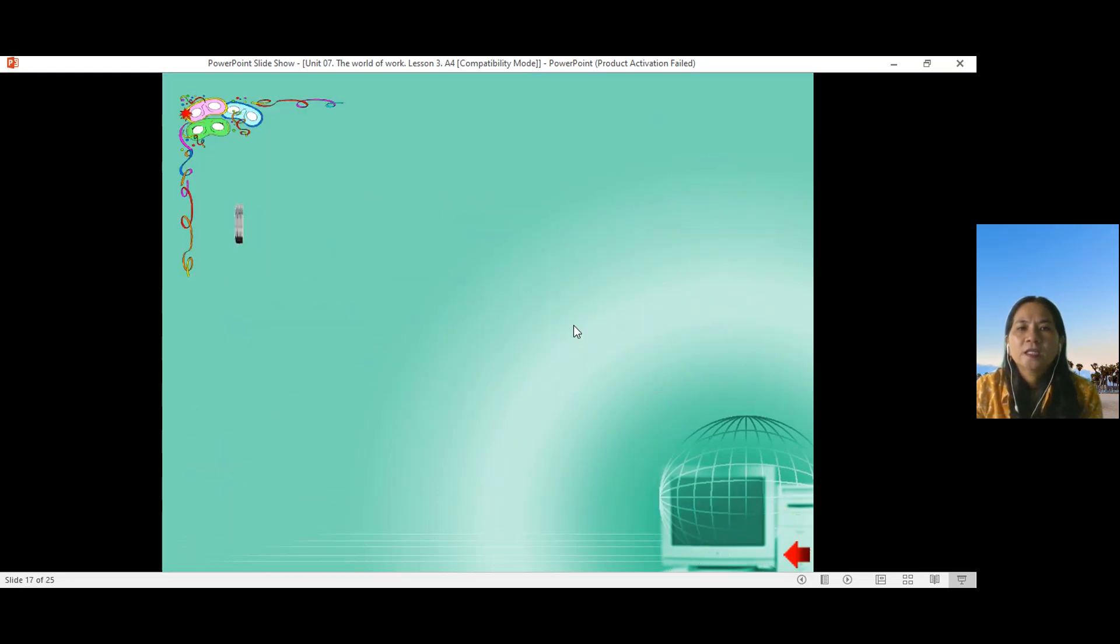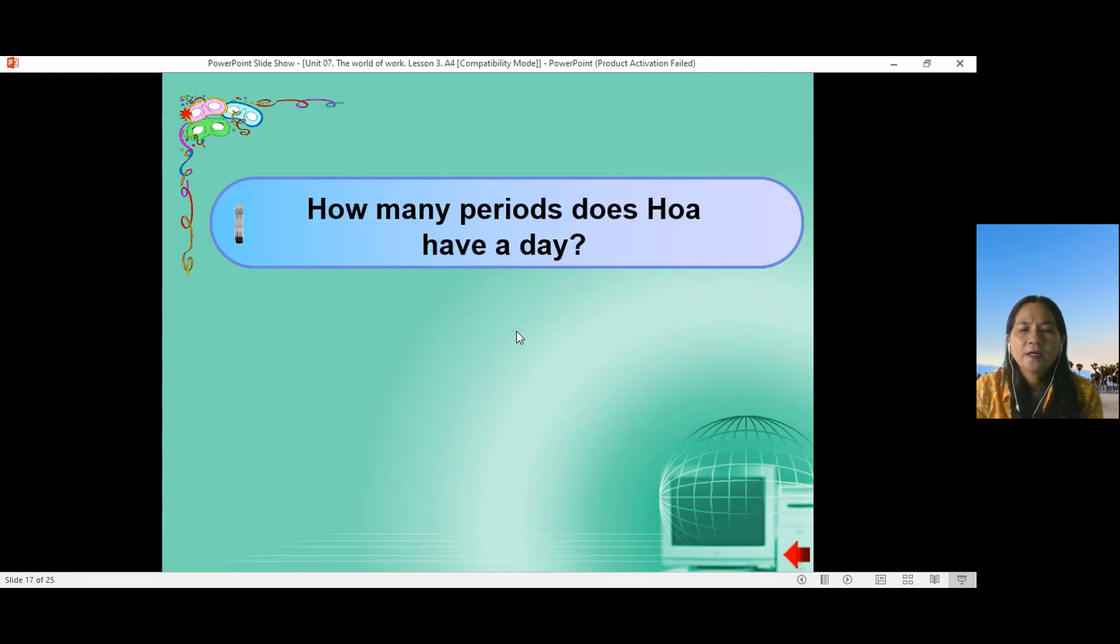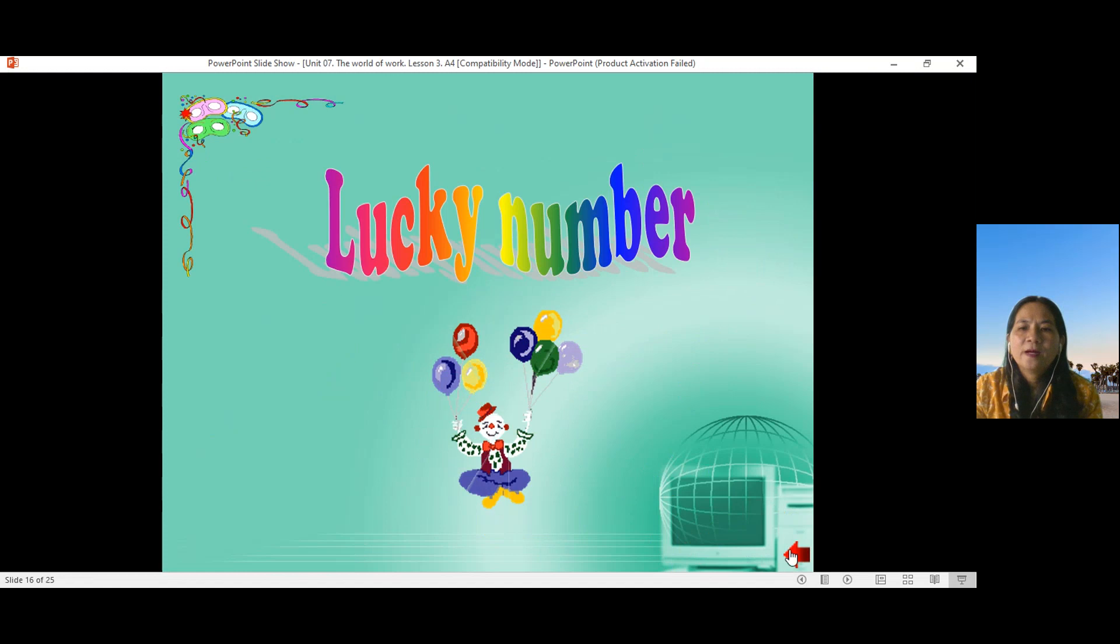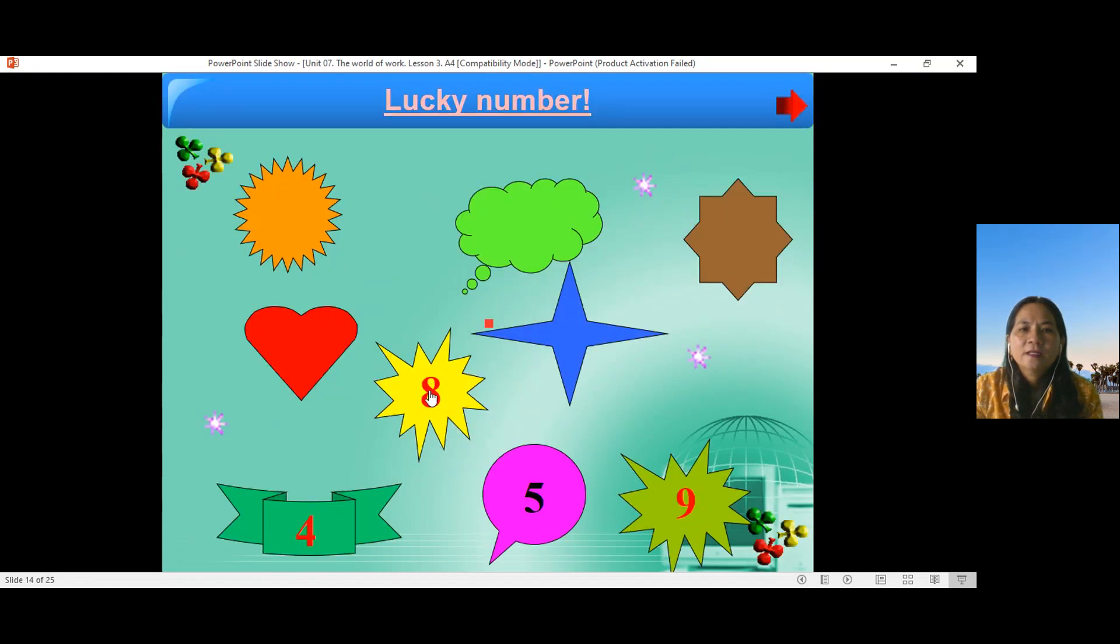Nào, number three. How many periods do Hoa have a day? Five? Okay. Five periods. She has five periods a day. Okay. Nào, number six. Lucky number. Okay.